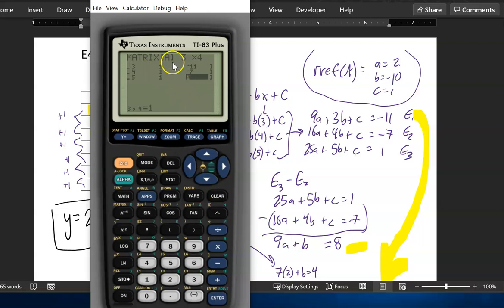And now what I want to do is I'm in this menu still editing this matrix, so I want to get out of it. So I'm going to use that quit command. So I'm going to go second quit.